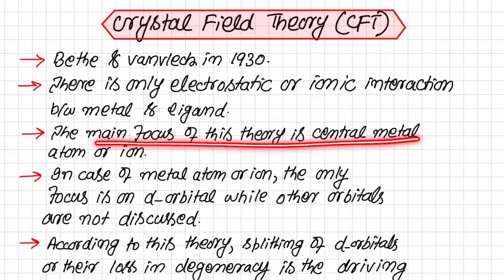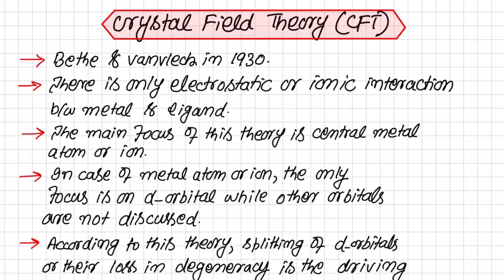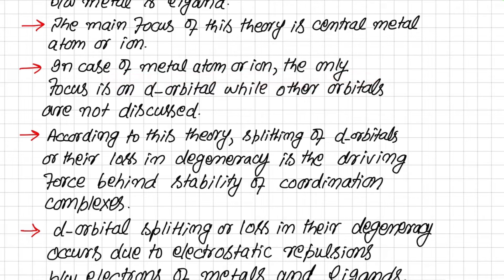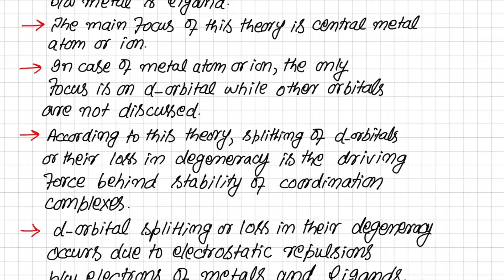The main focus of this theory is the central metal atom or ion. Although there is a bond between metal and ligand that is ionic in nature, this theory mainly focuses on the metal rather than on ligands. In the case of the metal atom or ion, the only focus is on the metal d orbitals — other orbitals like s and p are not discussed, unlike in valence bond theory where s and p orbitals are involved in hybridization.